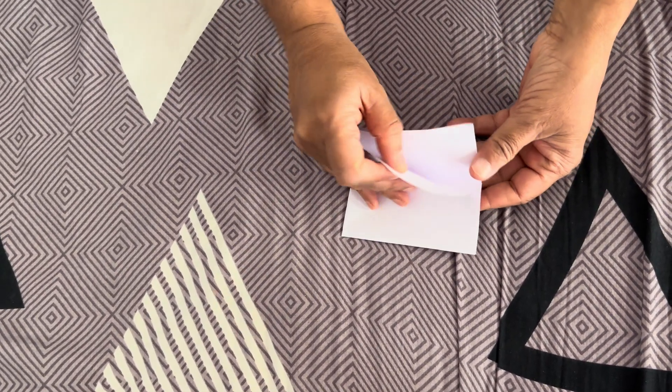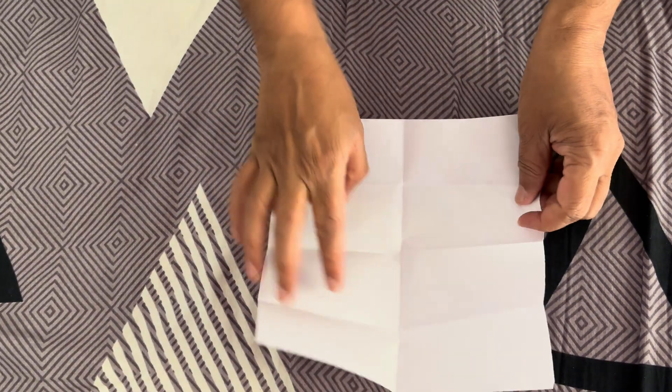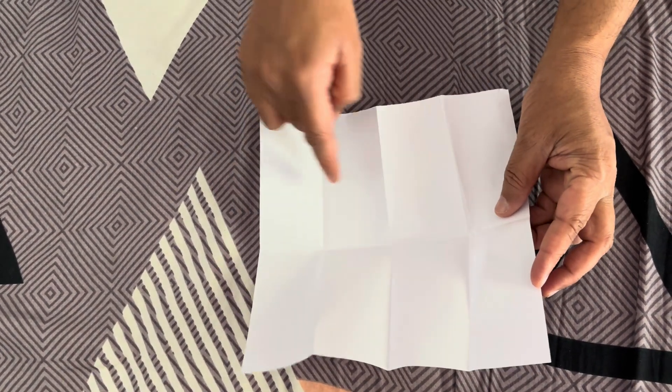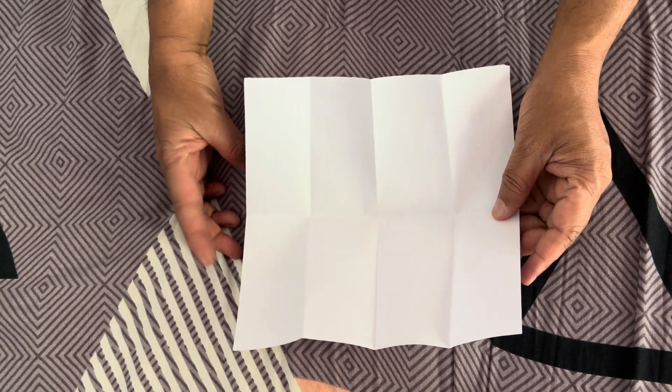So 2 to the power of 3 will give you, you can see very easily, that is 8: 1, 2, 3, 4, 5, 6, 7, 8 - 8 divisions. 2 to the power of 3 is 8 divisions.